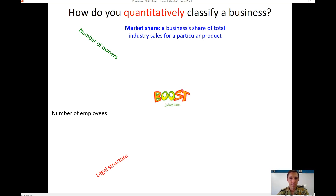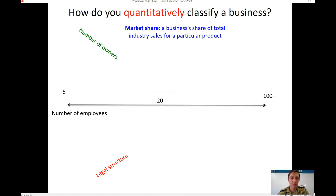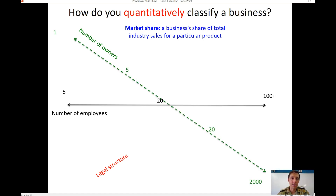Using Boost Juice as an example, you could look at the number of employees it has to determine its size. You could also look at how many owners it has — is it a public company with many shareholders, a partnership with three partners, or a private company with 15 private shareholders?